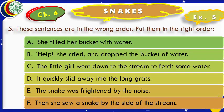Dear students, you are looking at exercise 5 on your computer screen. Let us read the instructions: 'These sentences are in wrong order — put them in the right order.' You have done exercises of this type before. We have to arrange them in the sequence in which they happened.